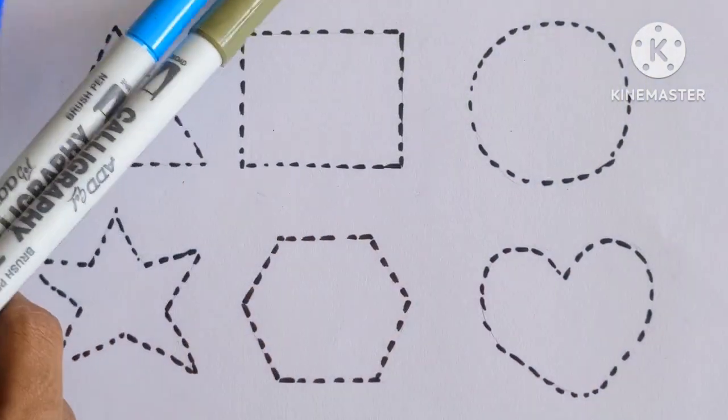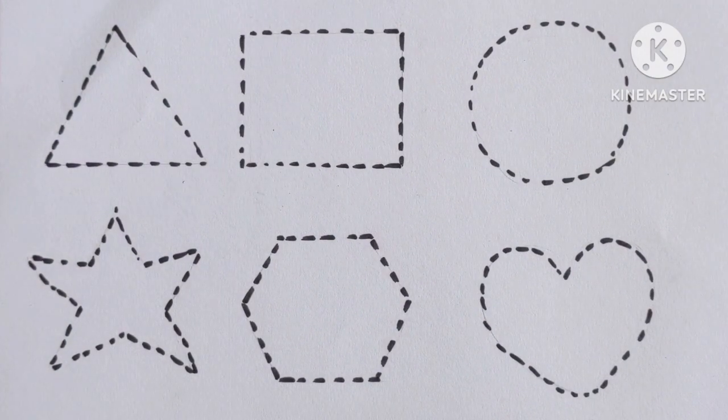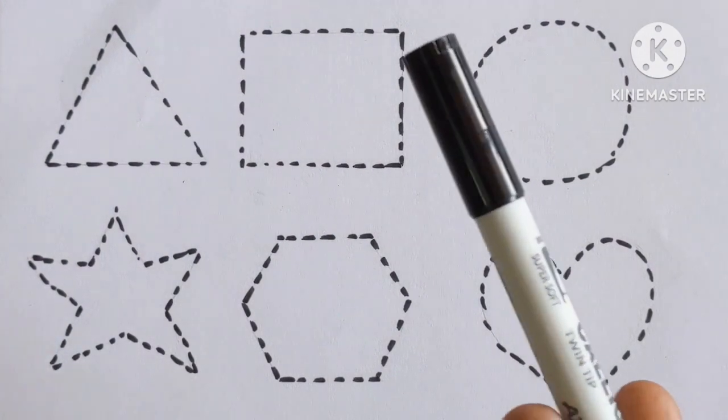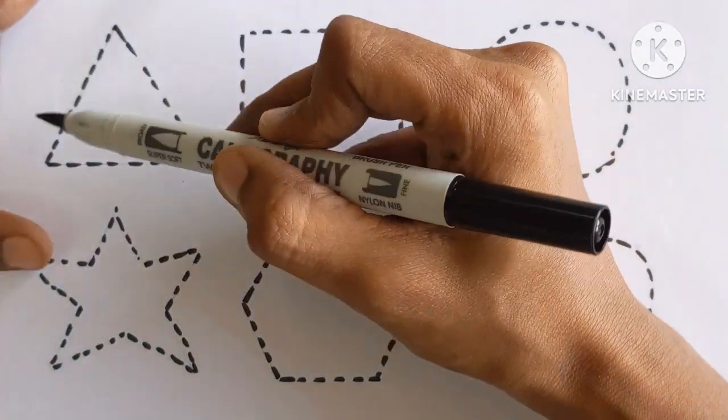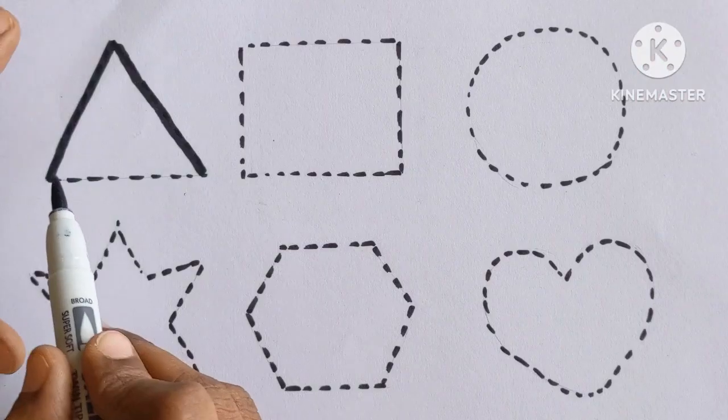we will learn 2D shapes. Here is our 2D shapes. Let's start. Black color. At first, trace the shapes by following the dot.